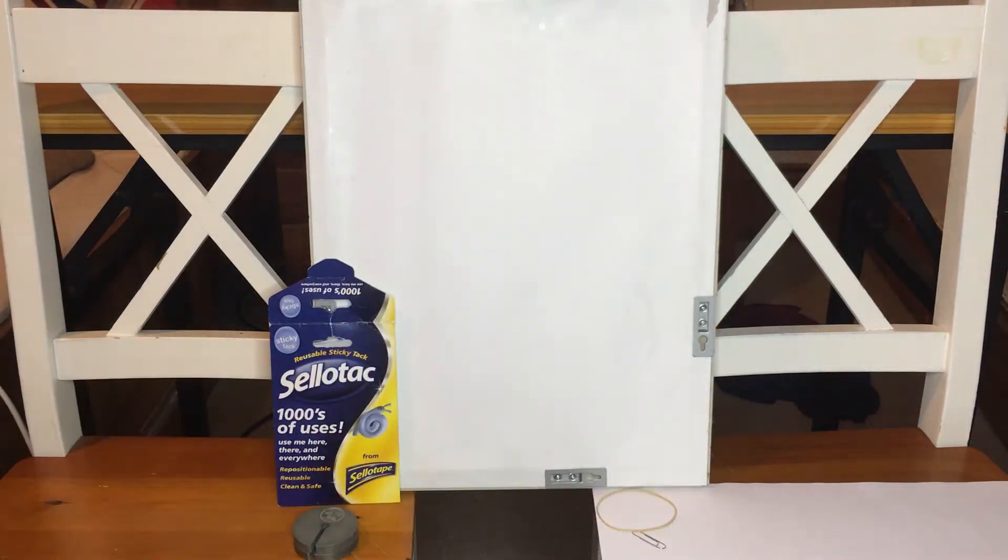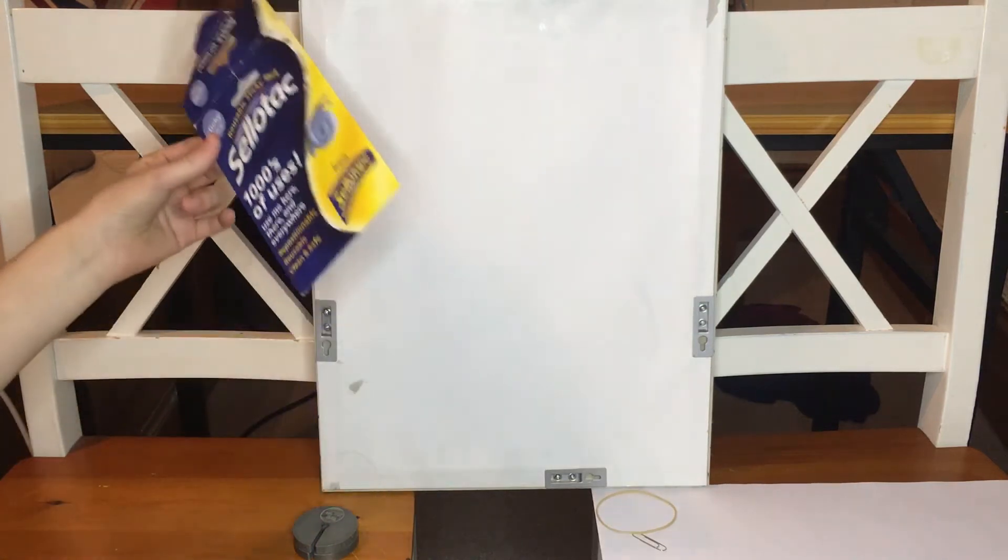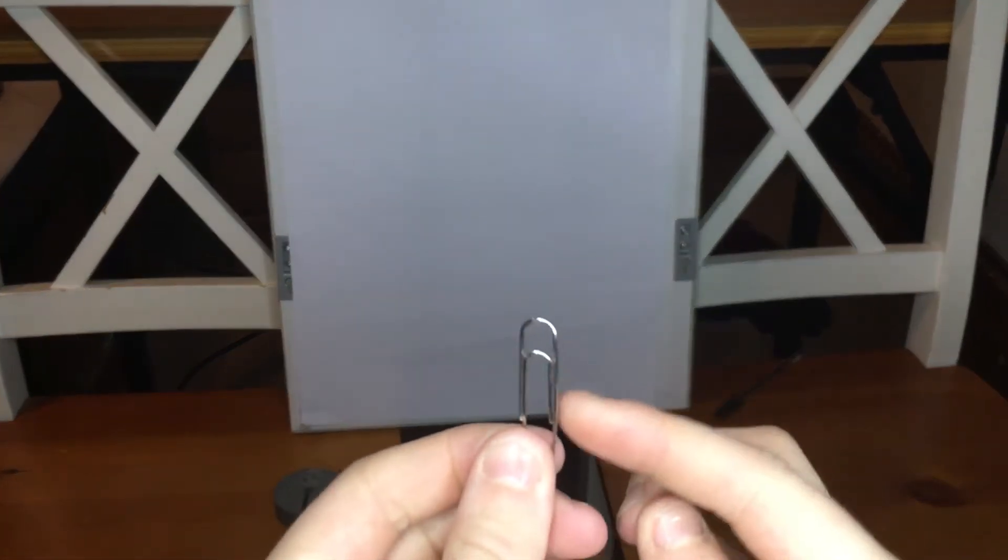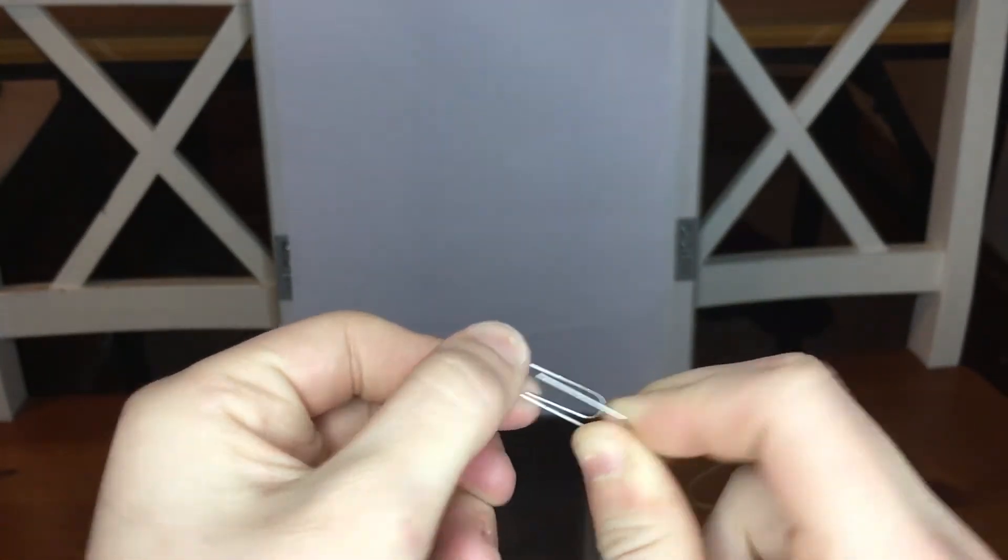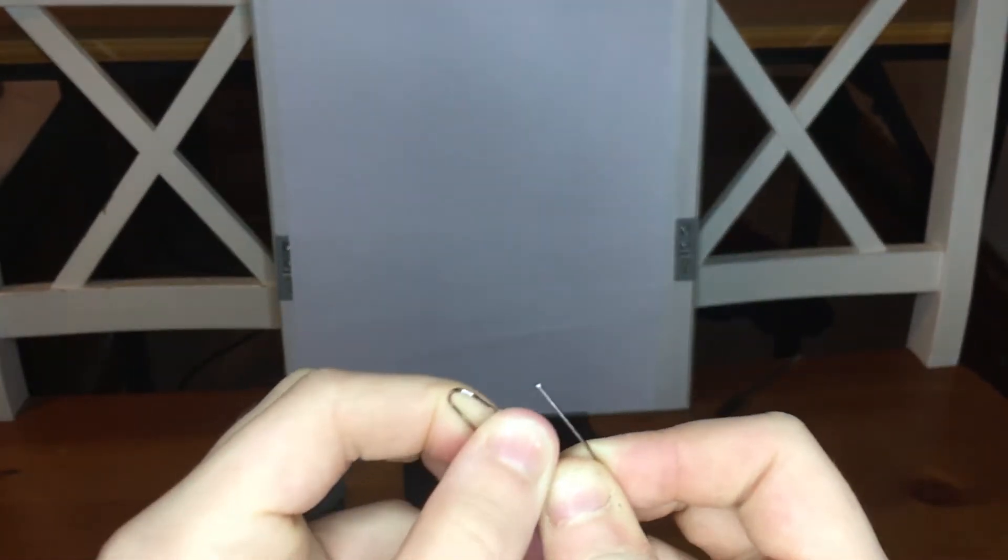Now you need to attach the piece of paper with blue tack. Once you have done that, you want to get your paperclip and twist that outer part the other way so that you have a little hook to hang your newtons on.